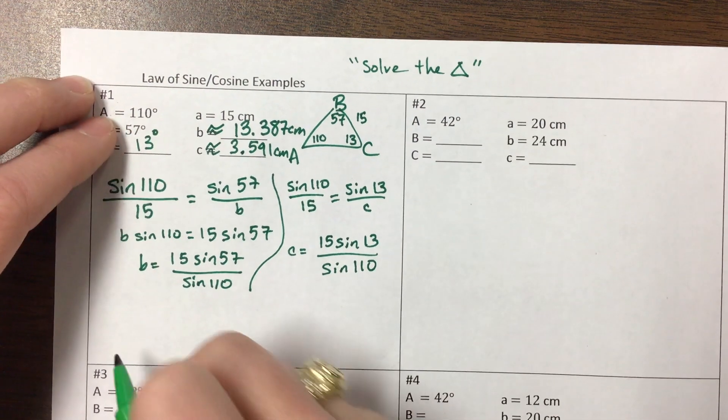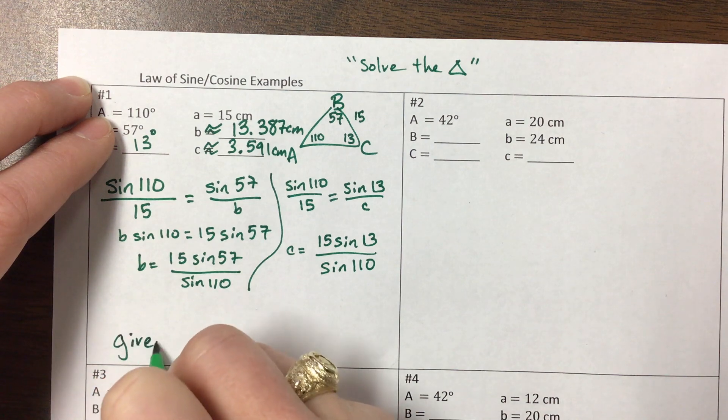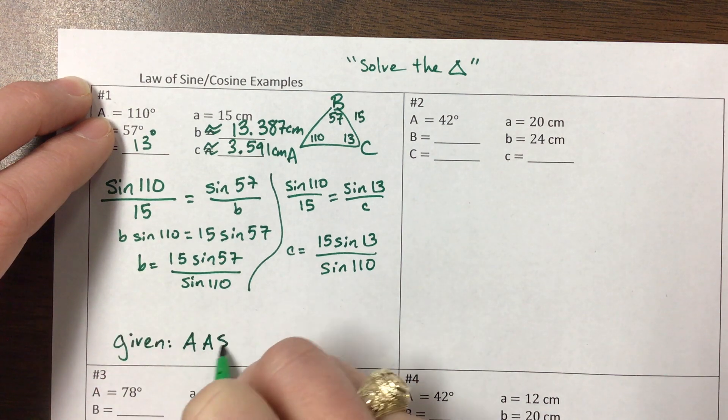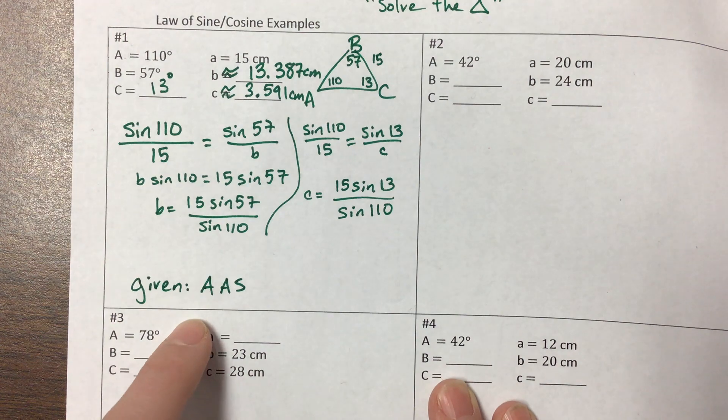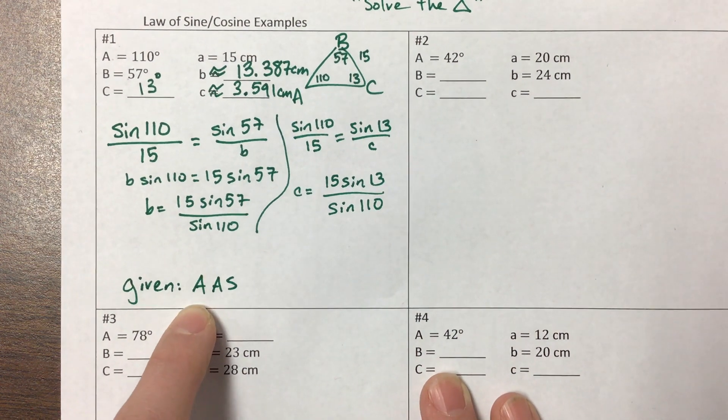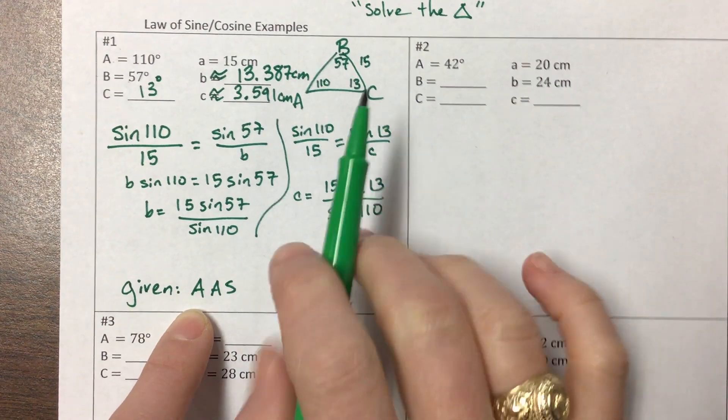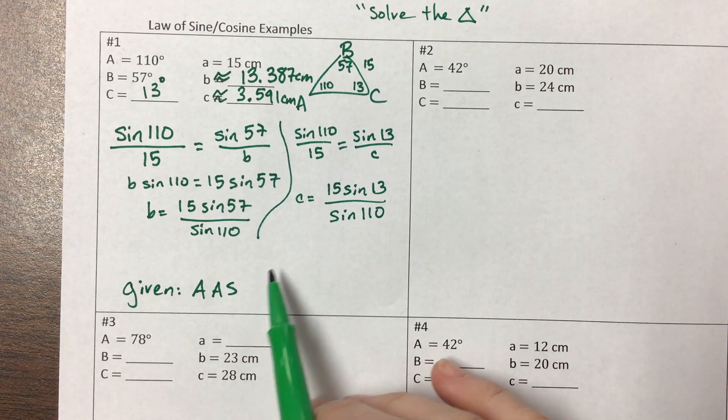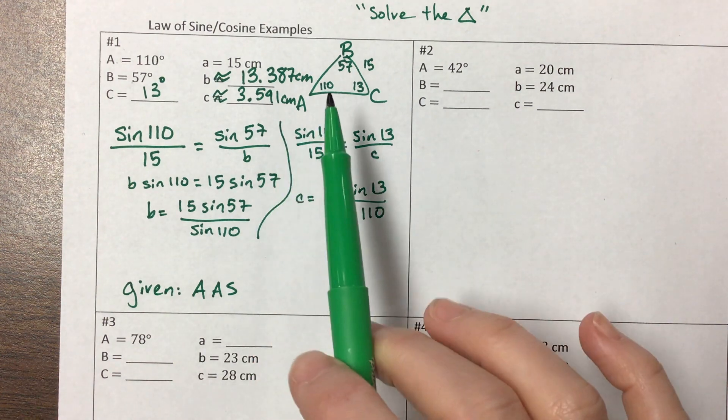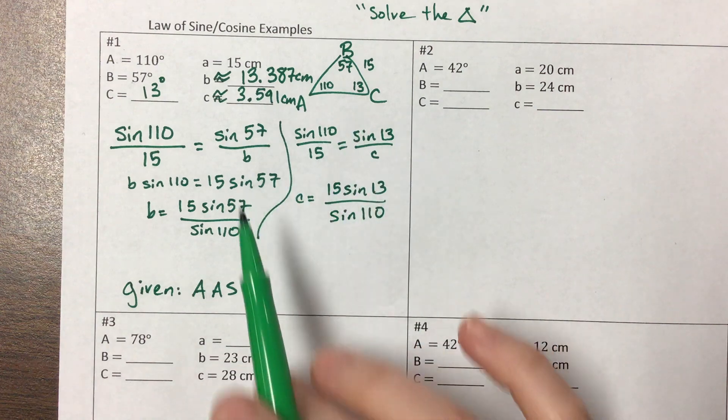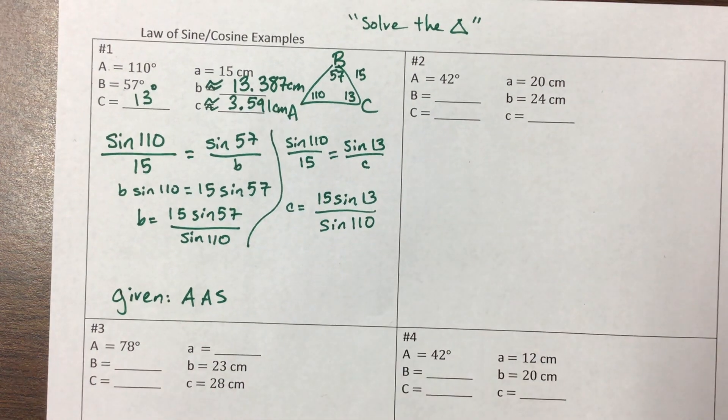Okay, so we were given angle, angle, side, which is definitely a way that we can prove that our triangles are congruent, you remember in geometry. And then that angle, angle, side is a good situation where we want to use the Law of Sines. So I should have said that in the first one, but now I have.